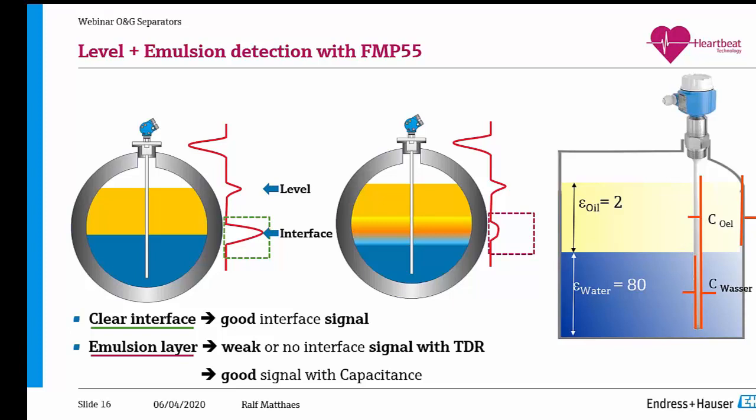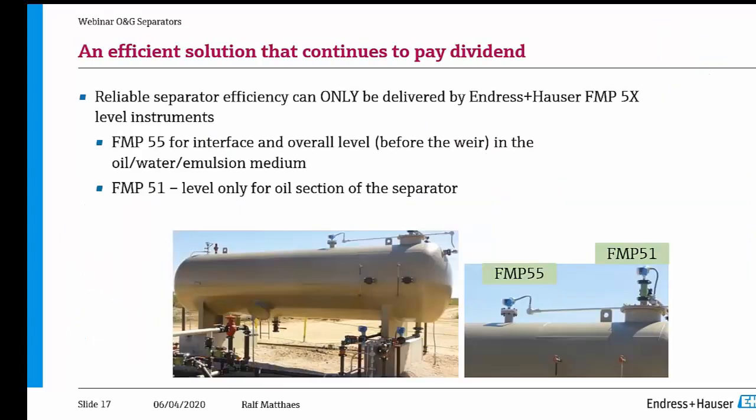Here you see just a combination of both in a separator. On the right side you see the FMP55 — this is the guided wave radar combined with capacitance. On the other side it is a guided wave radar without capacitance, just measuring the upper level of oil. The FMP55 measures the water-oil interface, the emulsion layer, and the upper level of oil before the weir.